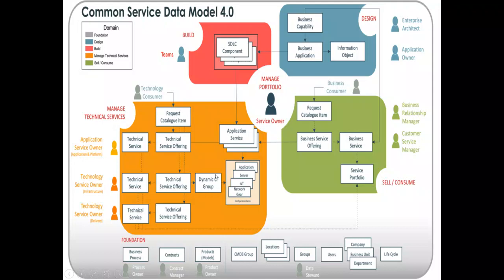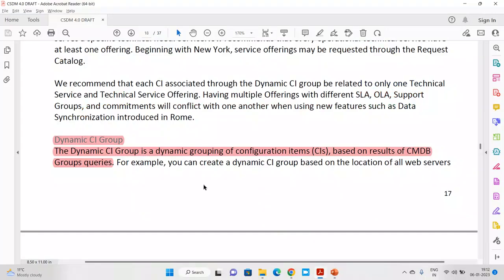Here, if I want all the applications or all the servers which are hosted in the London region specifically, I want the approval to go to this particular group — you can do this with the help of the Dynamic CI Group. It's a dynamic one, but one thing to be very clear: the system will not generate this automatically. We have to generate the query ourselves, and the system will just use the data to populate or run that particular logic.